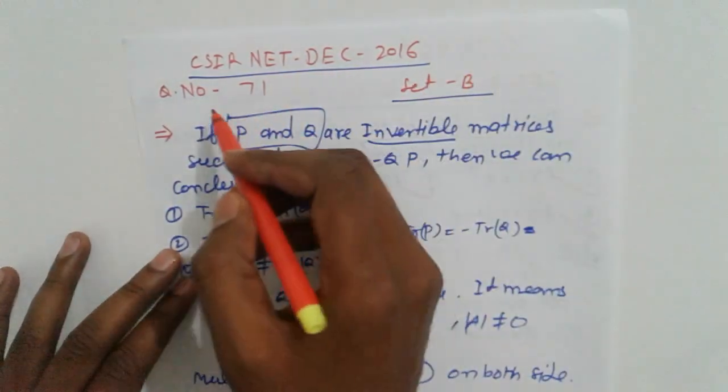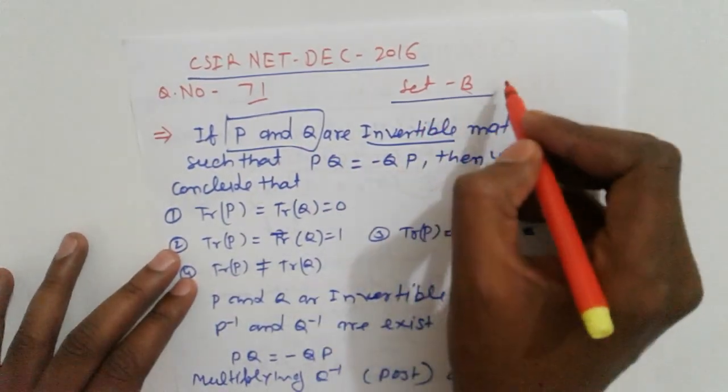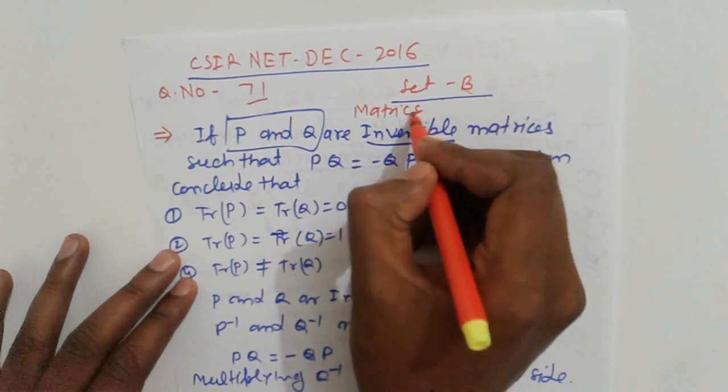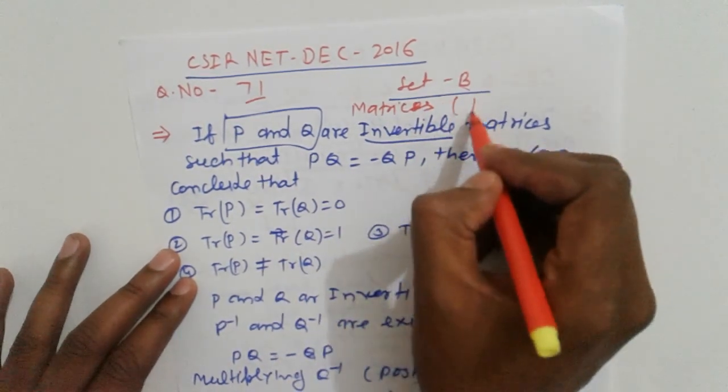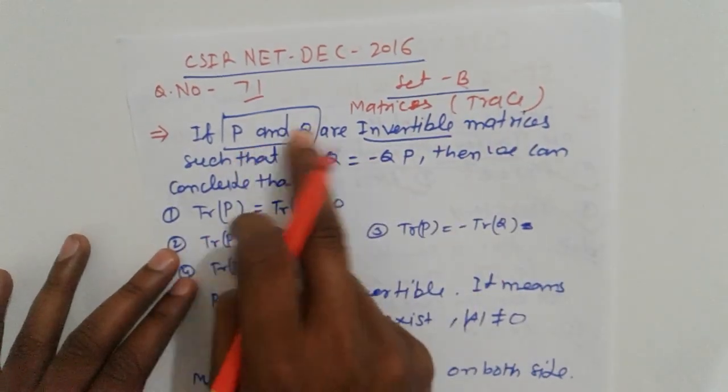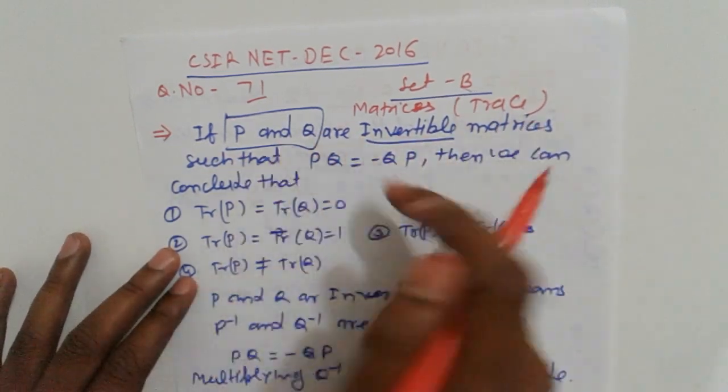CSI exam, December 2016, question number 71, set B. This is a problem related to matrices and the topic of trace. This topic is important - many times questions related to trace are asked.